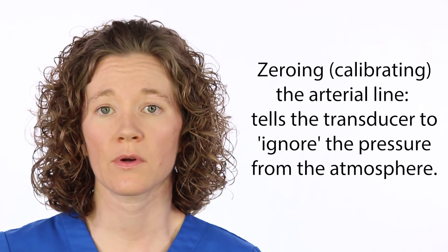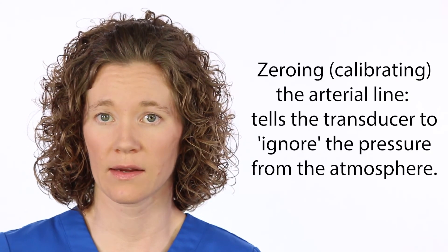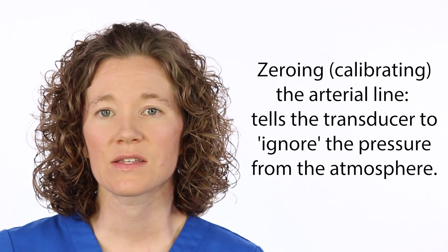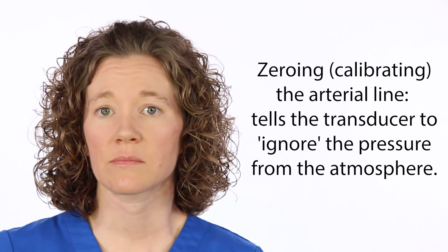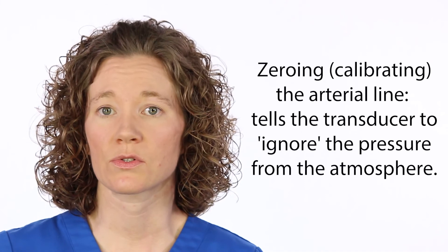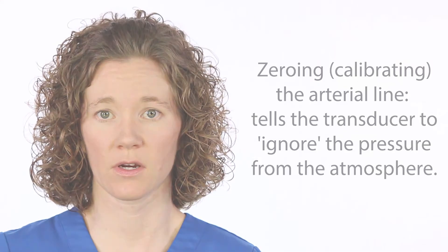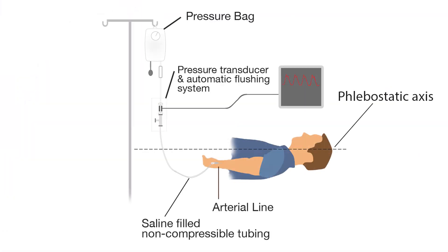Along with understanding waveforms on the monitor, the nurse is responsible for zeroing or calibrating the arterial line. Zeroing the system tells the transducer to ignore the pressure from the atmosphere. First, ensure the transducer, pressure tubing, and flush solution are assembled correctly and free of air bubbles.